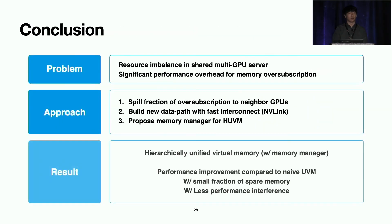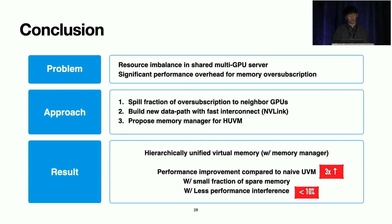In conclusion, there exists resource imbalance in shared multi-GPU servers, and there is significant performance overhead for memory over-subscription. To solve this, we spill a fraction of over-subscribed memory to neighbor GPUs and build a new data path with NVLink. We proposed MemHarvester as a memory manager for HUVM and achieved over 3x performance improvement compared to baseline with only a small fraction of spare memory, with minimal performance interference. Thank you for listening.